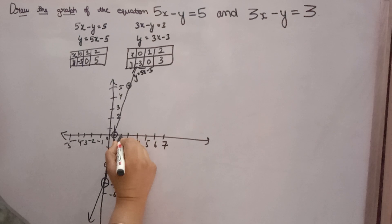Third point is x is 2, y is 3, so approximately here it will come. So one point was x is 0, y is minus 3 here. You will join these points, you will get a graph like this. With the help of a scale you have to join.